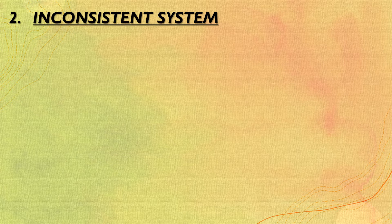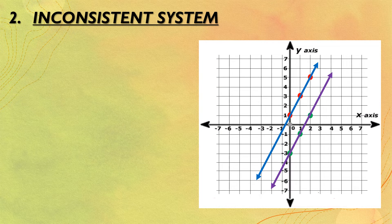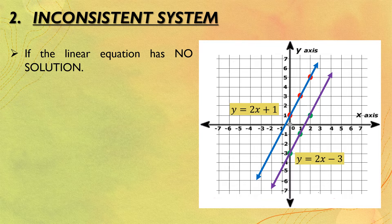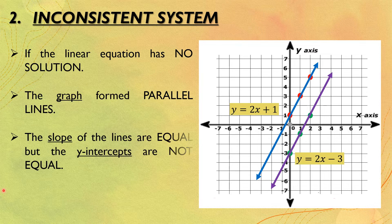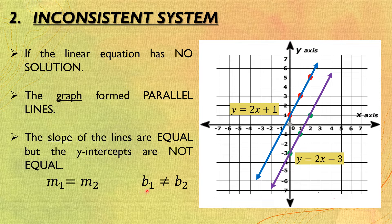The second system is the inconsistent system. Let us consider this given graph. We have two lines — the blue and the purple. The blue line is the graph for y equals 2x plus 1 and the purple is for y equals 2x minus 3. When we say inconsistent system, it is inconsistent if the linear equation has no solution — meaning there are no values of x and y. The graph forms parallel lines, where the two lines do not intersect at any point; even when extended, they never meet. The slopes of the lines are equal but the y-intercepts are not equal. In equation form: m₁ equals m₂ and b₁ is not equal to b₂. That is what we call the inconsistent system.